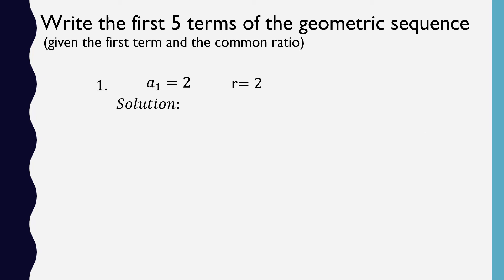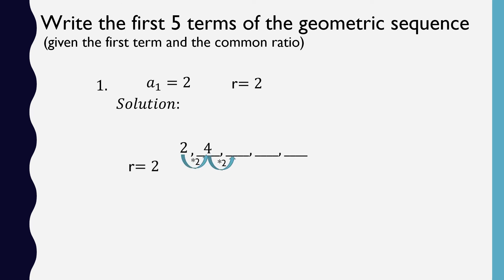Now, write the first five terms of a geometric sequence given the first term A sub 1 and the common ratio R. For item 1, A sub 1 equals 2 and R equals 2. Starting with the first term 2, multiply by R each time: 2 times 2 is 4, times 2 is 8, times 2 is 16, times 2 is 32. So the first five terms are 2, 4, 8, 16, and 32.